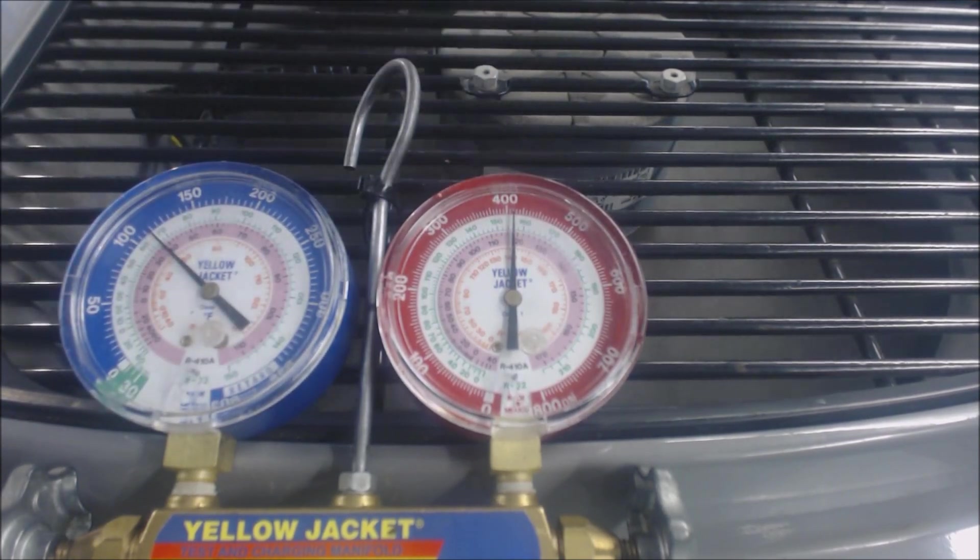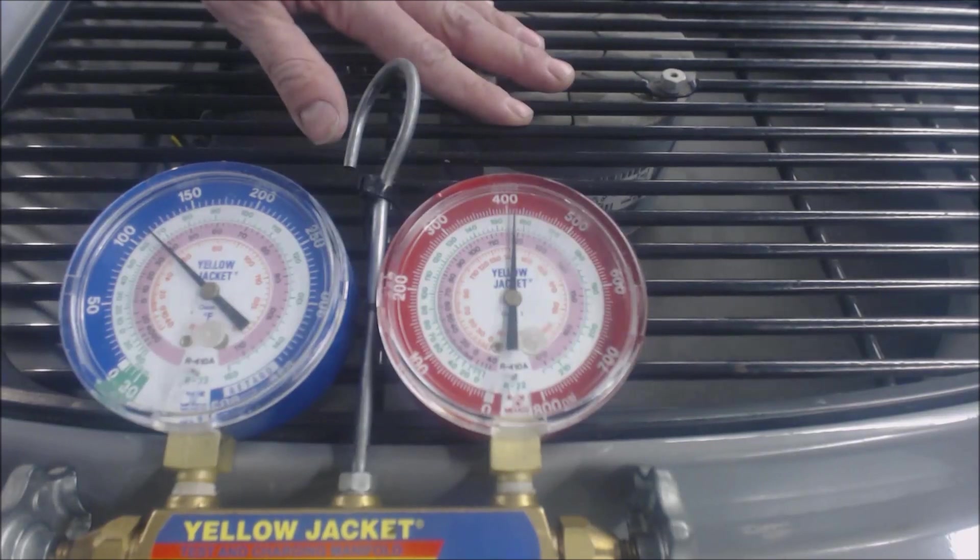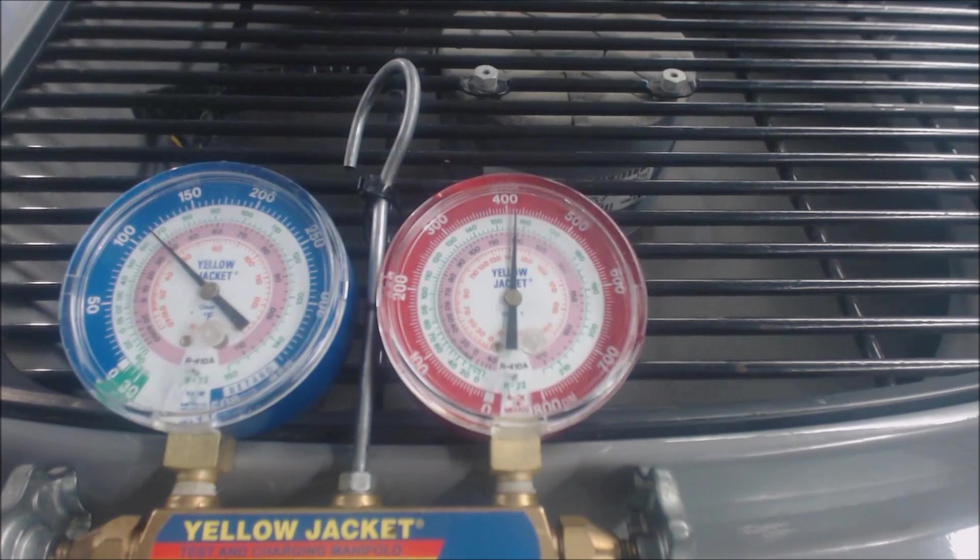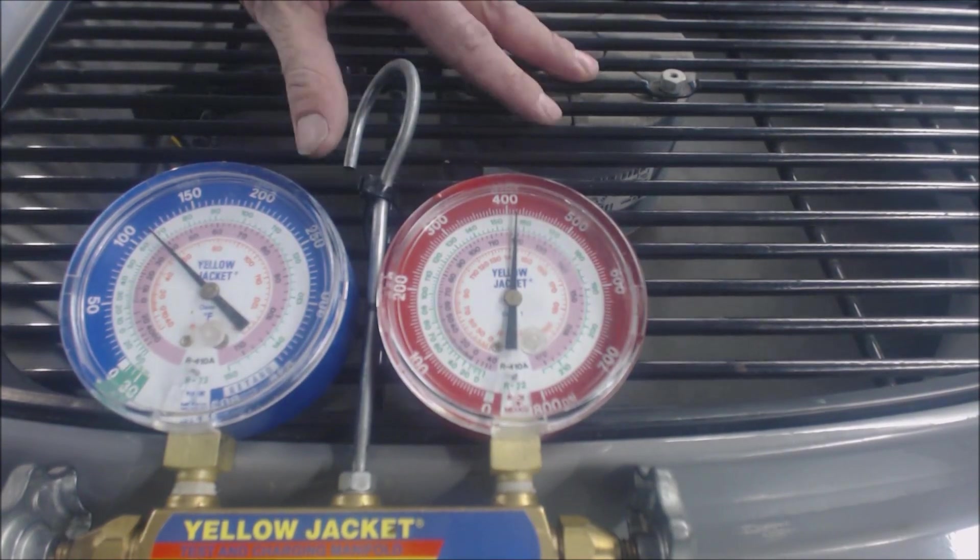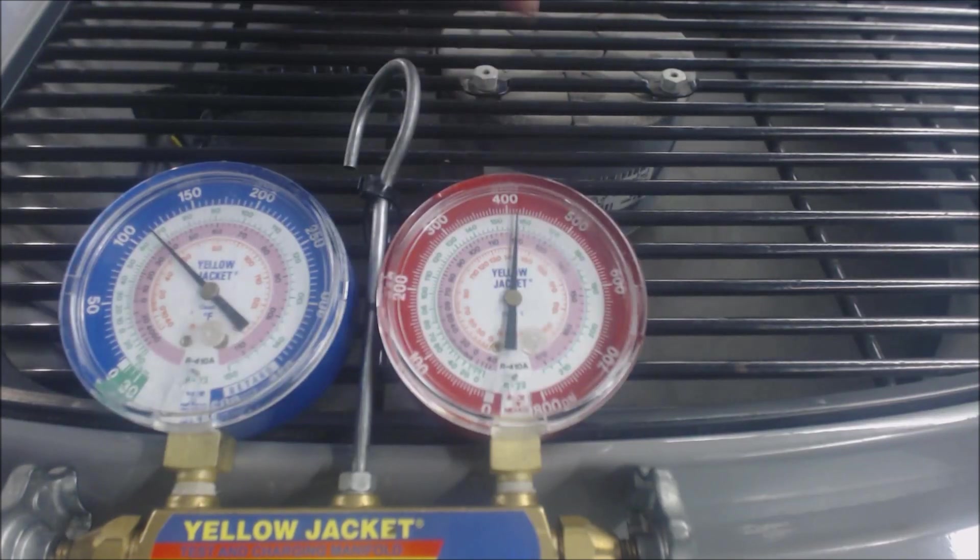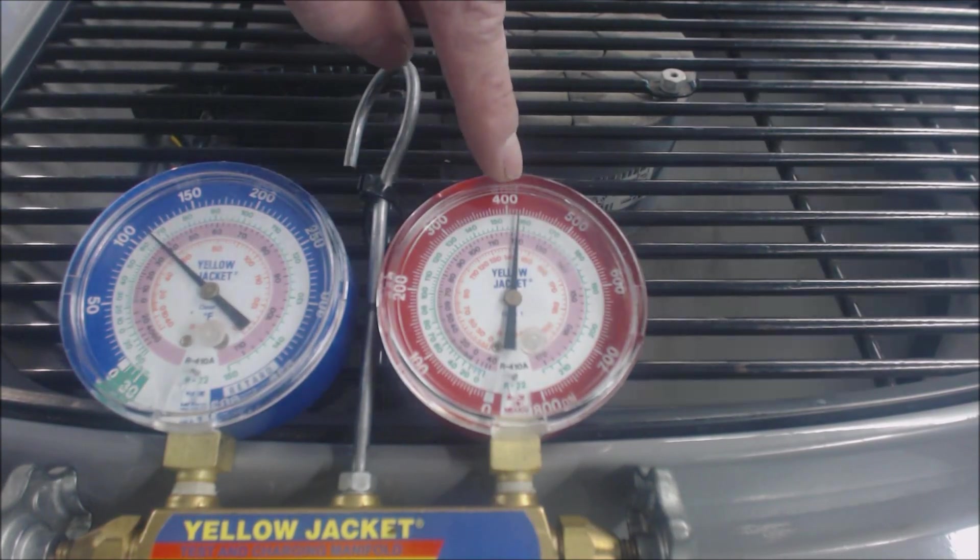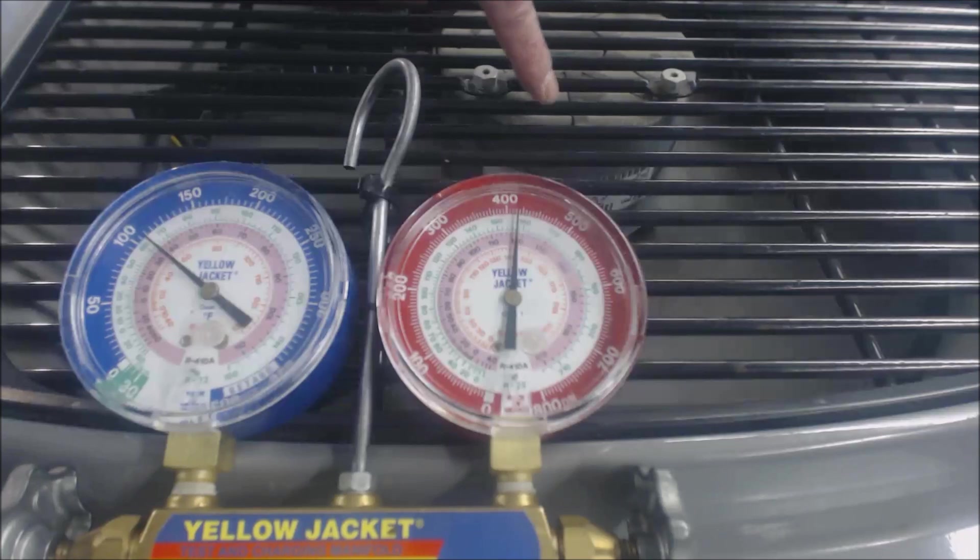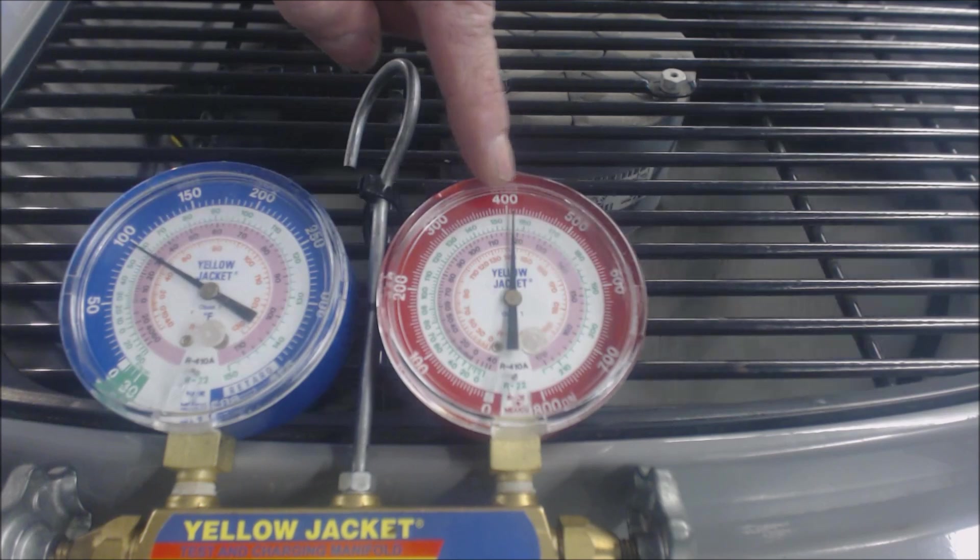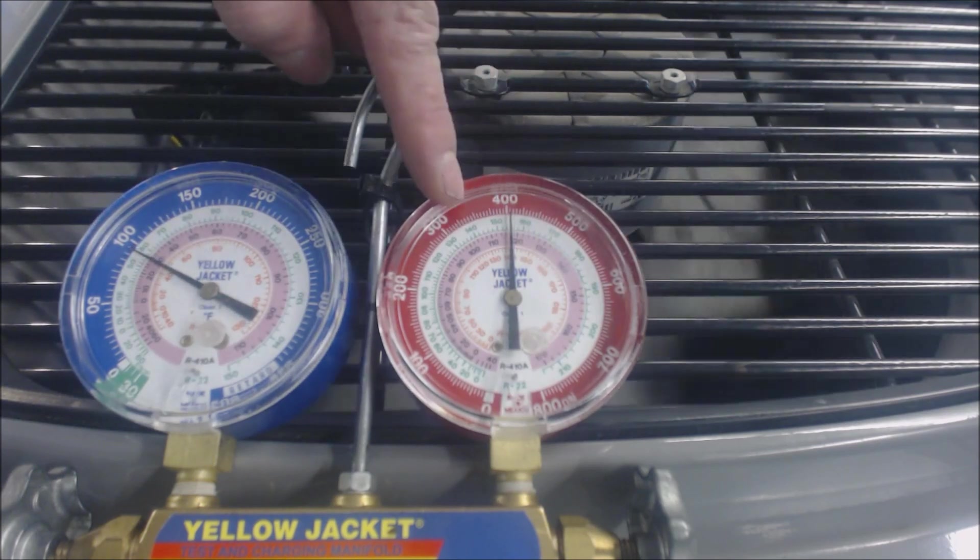What we're going to do here is we're looking, the outdoor fan is running right now, and the pressure is going up. And then we're going to see that the outdoor fan is going to stop, and then the discharge pressure is going to go down. So presently we're at about 420 PSIG. So you've just seen that the outdoor fan has stopped, and now you see the pressure is going down.